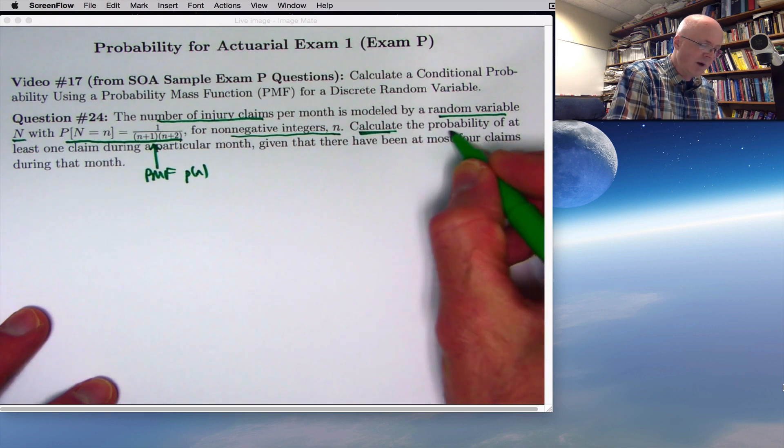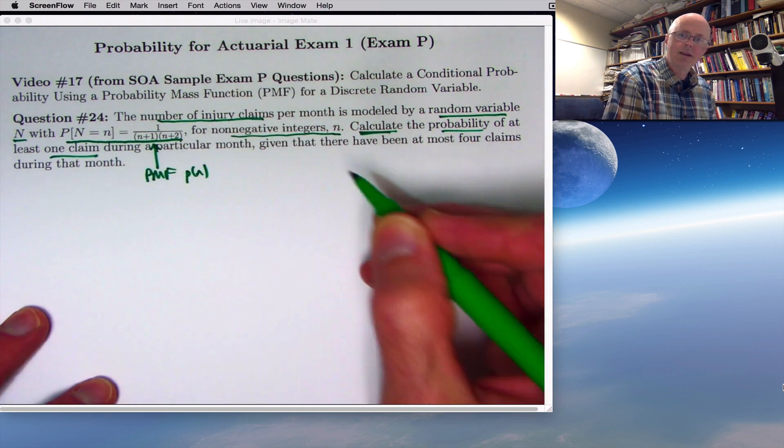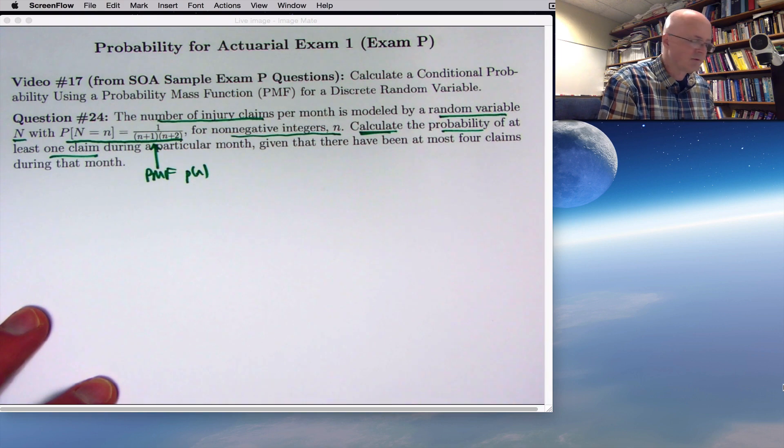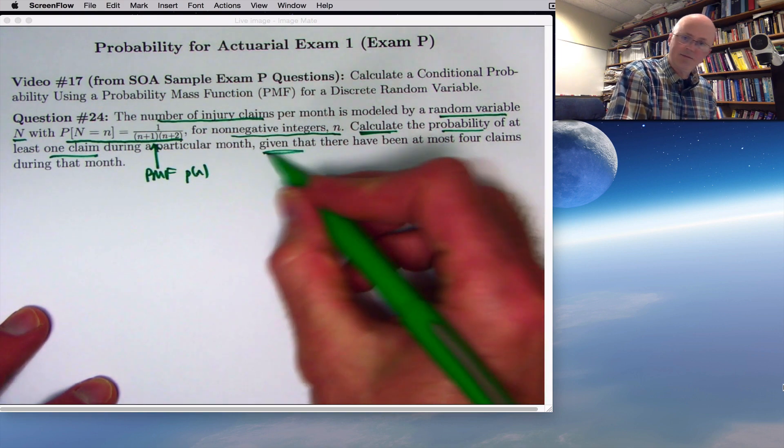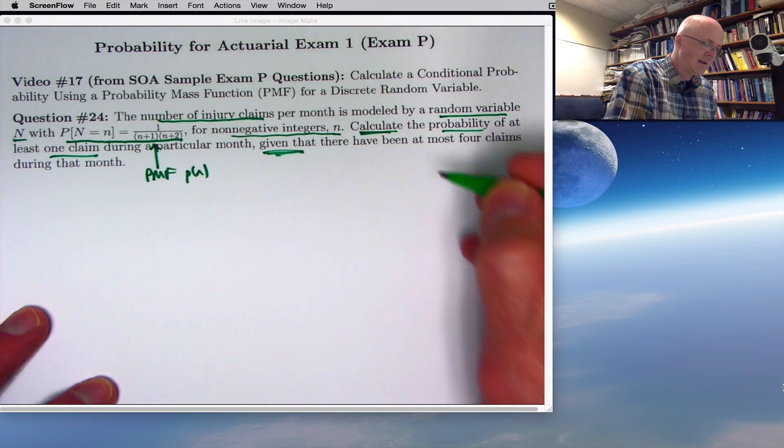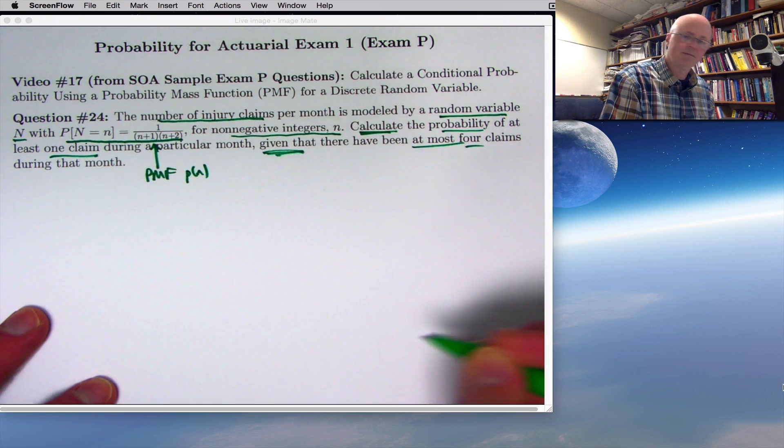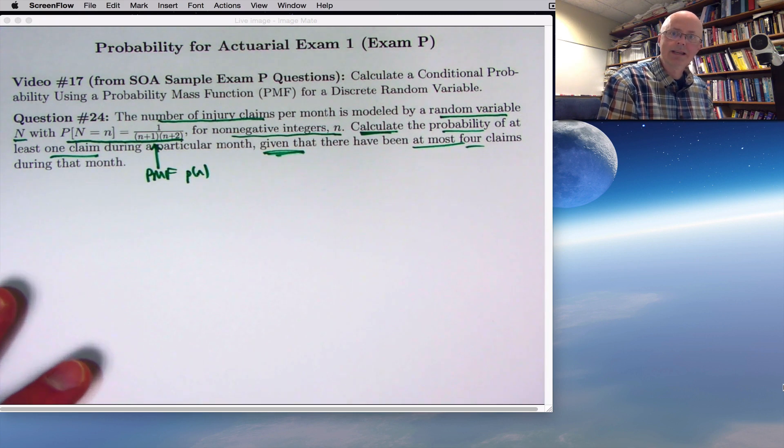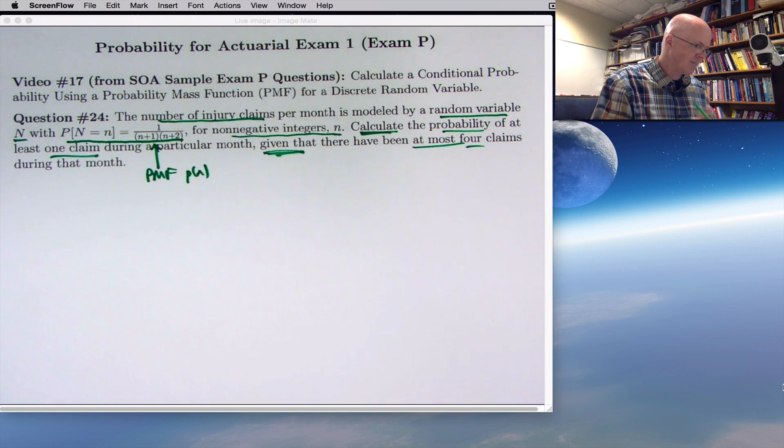The goal is to calculate the probability of at least one claim, capital N is greater than or equal to 1, in a particular month, given that, so it's a conditional probability, there have been at most four claims during that month. Capital N is given to be less than or equal to 4.